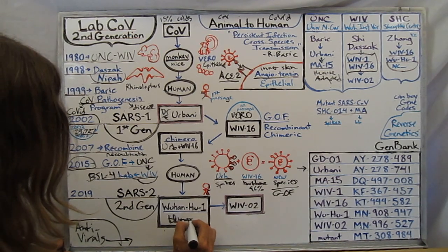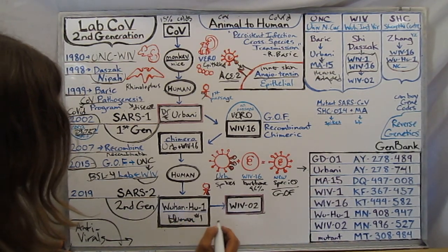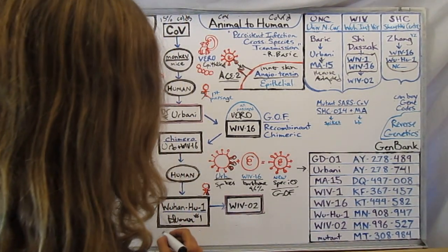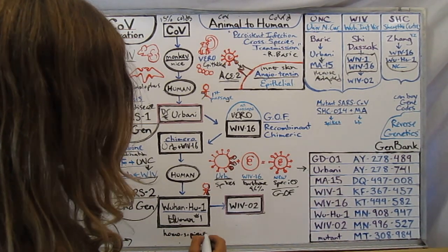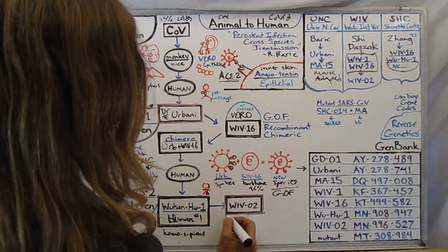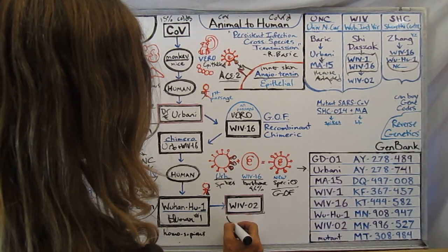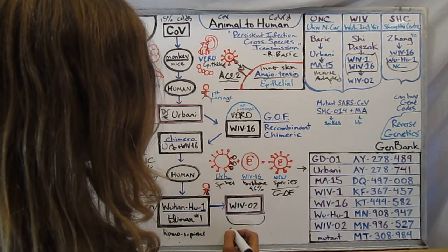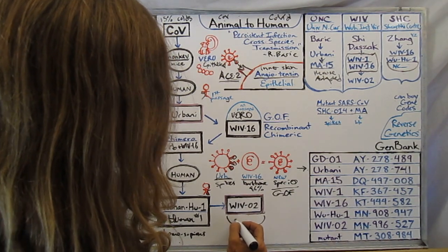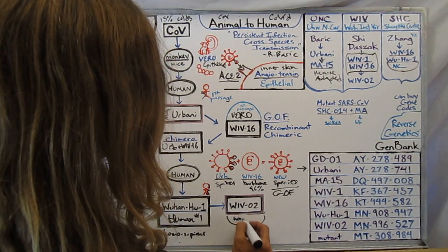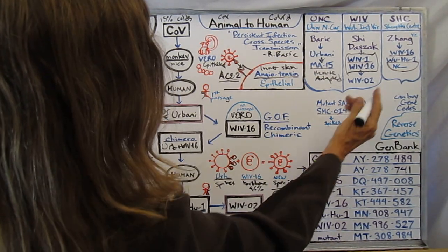And so the first one they have on record is the Wuhan human number one which they abbreviated to HU, it's the first one human number one. And they just say homo sapiens, I don't know why they do not say where it came from. I believe though that this is their second generation.